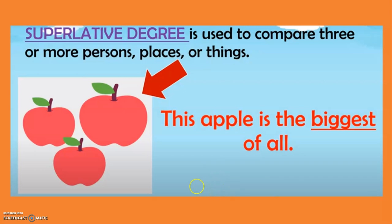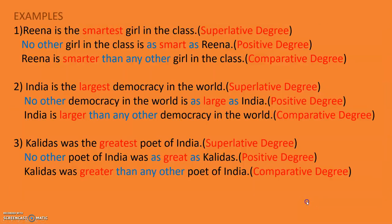Now let us see when it comes in sentences and when you have to change it into different types of degrees. Let us start with sentences. The first example — be very attentive now. We say: Reena is the smartest girl in the class.